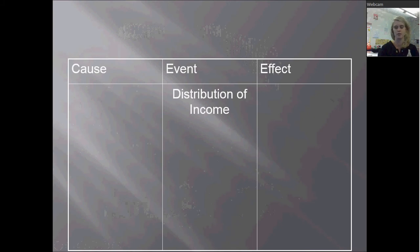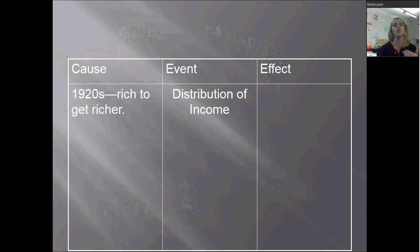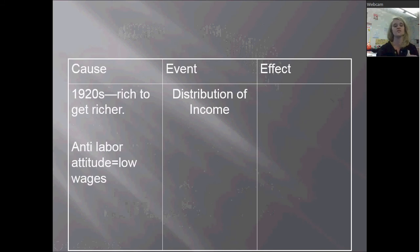The next cause is the distribution of income — basically, how many rich people are there versus poor people. During the 1920s, the rich are getting richer. Think about The Great Gatsby and all those rich people. People who are rich are playing the business game and continuing to get richer. The poor are getting lower. There's this anti-labor attitude — people are afraid of labor because of the idea of communism. Labor unions are unpopular, and when labor unions are unpopular, wages get lower.